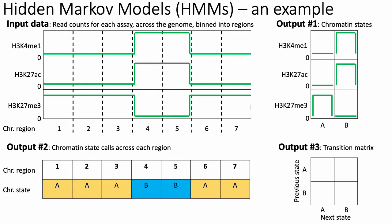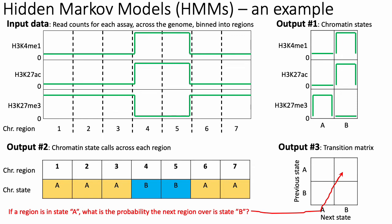The last thing the HMM tells you is what's called a transition matrix. If the HMM identifies two states, it gives you a two-by-two table; if five states, a five-by-five table. This table tells you: if you are in one state, say state A, what is the probability that the next state in the next region over is going to be state A or state B? For example, the value in the top right-hand corner of this two-by-two table tells you basically, if a given region is in state A, what is the probability that the next region over is going to be a state B.